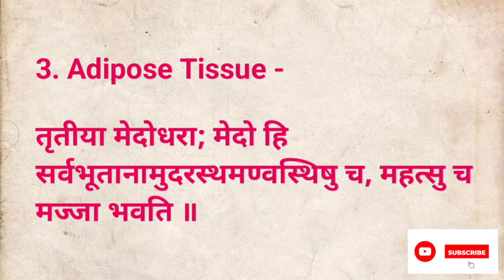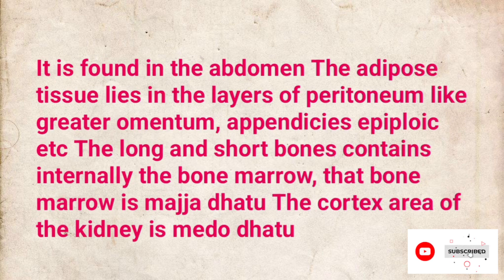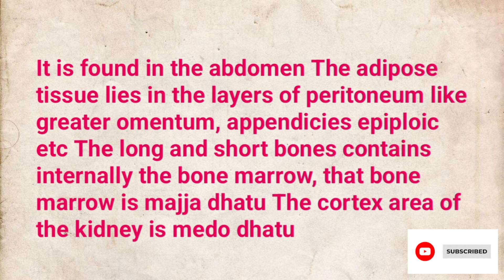Third kala is medodharakala, correlated to adipose tissue. It is found in the abdomen. The adipose tissue lies in the layers of peritoneum like the greater omentum, appendices epiploicae, etc. The long and short bones contain internally the bone marrow, which is majja dhatu. The cortex area of the kidney is medodhatu.